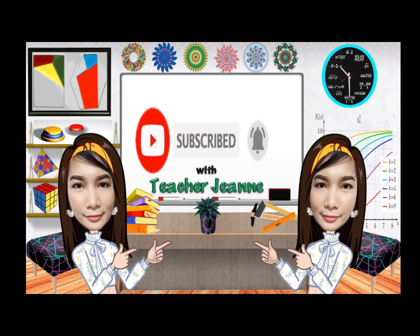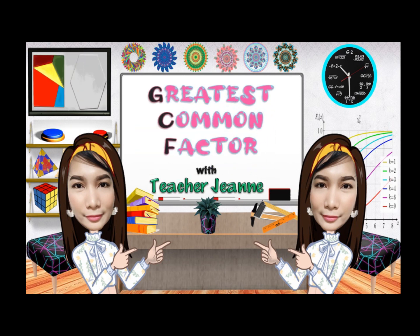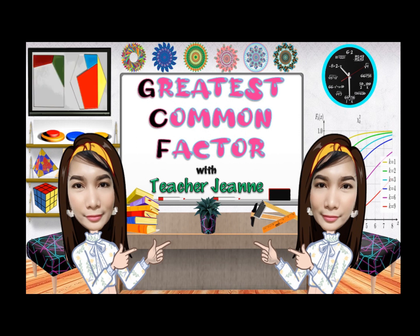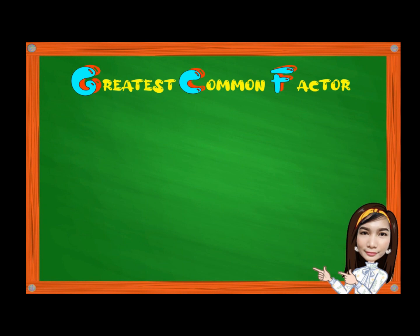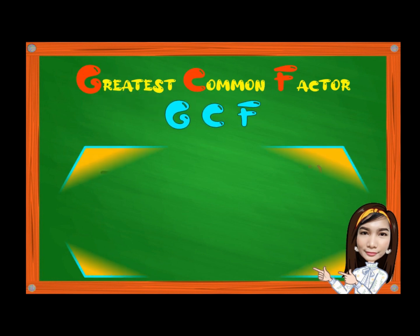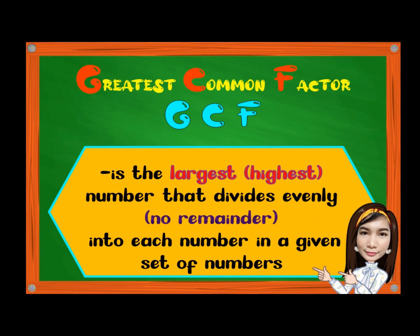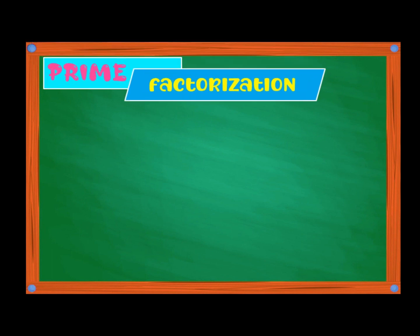Hi, it's me, Teacher Jean. In this lesson, you will learn about finding the greatest common factor. But before that, let's define first what is the greatest common factor, or GCF. GCF is the largest or highest number that divides evenly, means no remainder, into each number in a given set of numbers. Here, we need to recall our previous lesson, which is prime factorization. The best strategy is to factor first each number into product of its prime, so we can use the two methods.